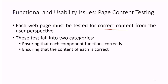In page content testing, we check whether there is correct content from the user's perspective. These tests fall into two categories: ensuring that each component functions correctly, and ensuring that the content of each component is correct.